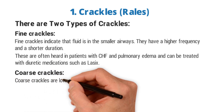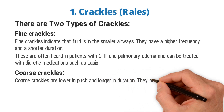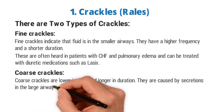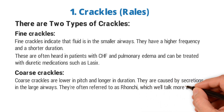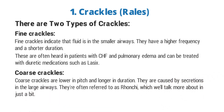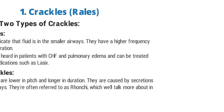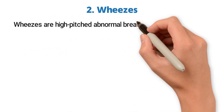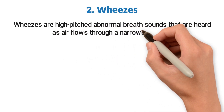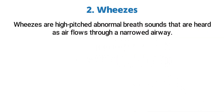Then we have coarse crackles — these are lower in pitch and longer in duration, caused by secretions in the larger airways. They are often referred to as ronchi, which is a breath sound we will talk about in just a bit. Next up we have wheezes — these are high-pitched abnormal breath sounds that are heard as air flows through a narrowed airway.